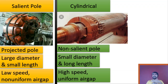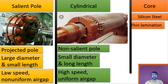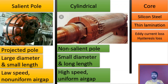Now let's look at the rotor core. The core of the rotor is made up of silicon steel. Thin laminations of silicon steel are stacked together to form a complete rotor shape. As discussed earlier, because of silicon steel and thin laminations we are able to reduce eddy current loss and hysteresis loss in the rotor.